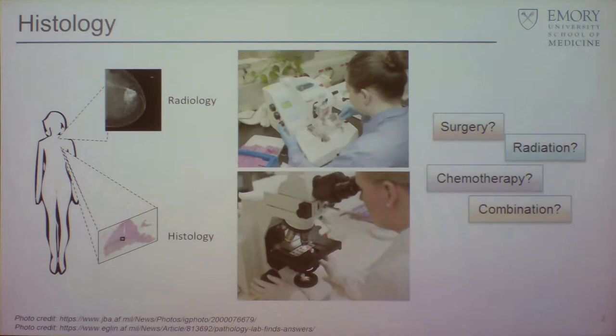What you're seeing here is basically the tissue being cut. We literally take this tissue out, put it in a paraffin block, then put it in something called a microtome, cut it into very, very thin sections, and then paste these on a glass slide for someone to look at.